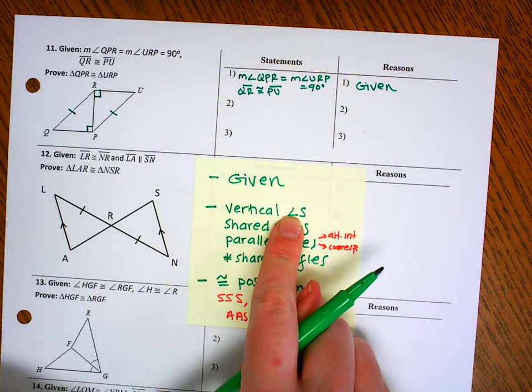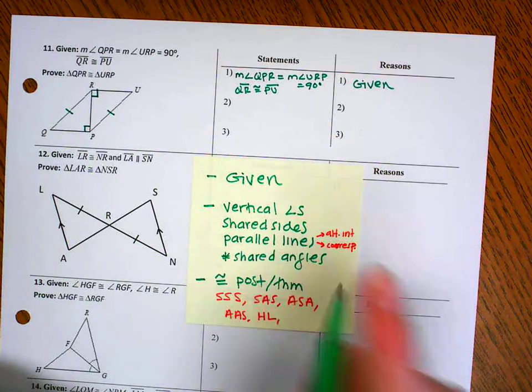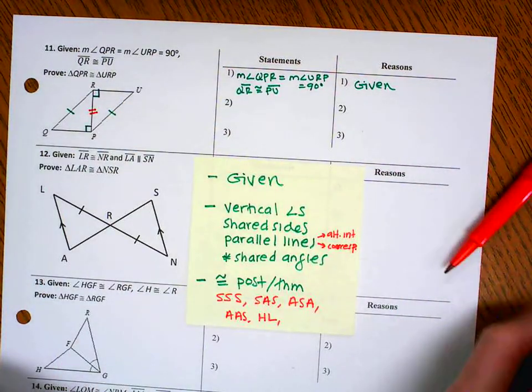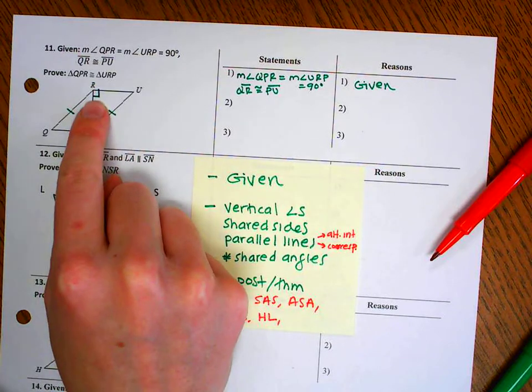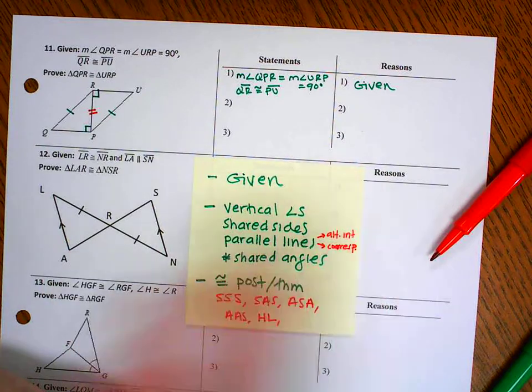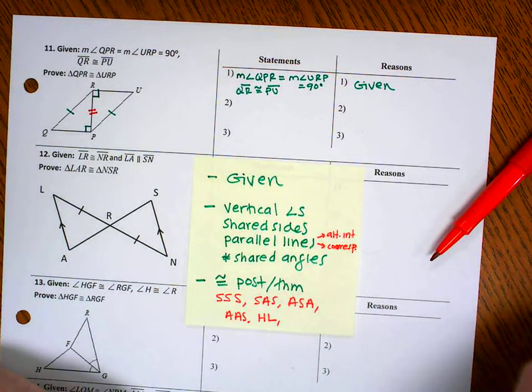Do we have any vertical angles? I don't see any. Do we have any shared sides? I see one right here. So let's put that in our proof. So the reason I do different colors, the green I always do is the given, the red I do is things I have to add and give a reason other than given. You don't have to do it that way. I just find it helpful for me.